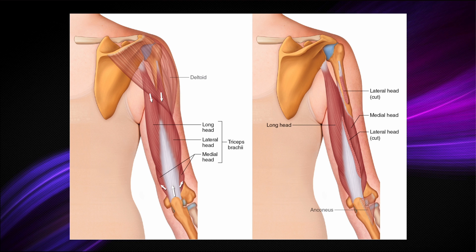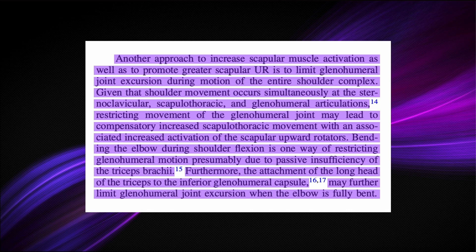The triceps brachii muscle — with the elbow straight here — if the elbow were to be bent or flexed, the tricep muscle would be stretched. Recall that the triceps brachii has three heads: a lateral head, a medial head, and the long head, which is a two-joint head that crosses the shoulder joint. Additionally, if we bend the elbow and begin elevating the shoulder in front of us in shoulder flexion, that puts an additional stretch particularly on the long head. This idea of bending the elbow and then lifting the arm up puts the triceps brachii on passive insufficiency, dramatically limiting glenohumeral joint excursion. Furthermore, the attachment of the long head of the triceps to the inferior glenohumeral capsule may further limit glenohumeral joint excursion when the elbow is fully bent.